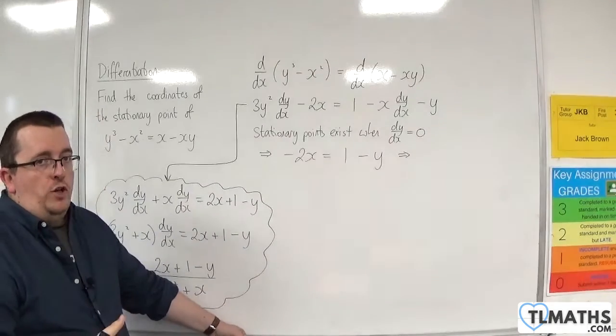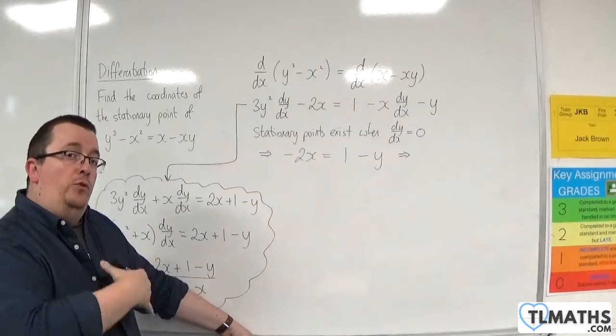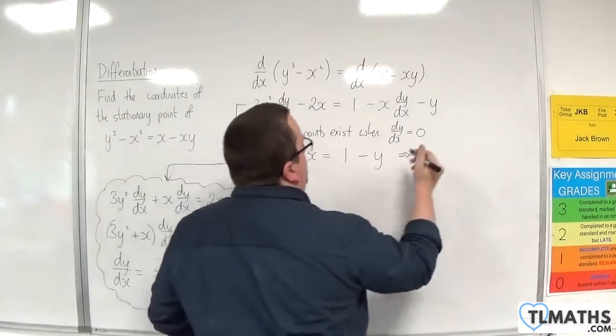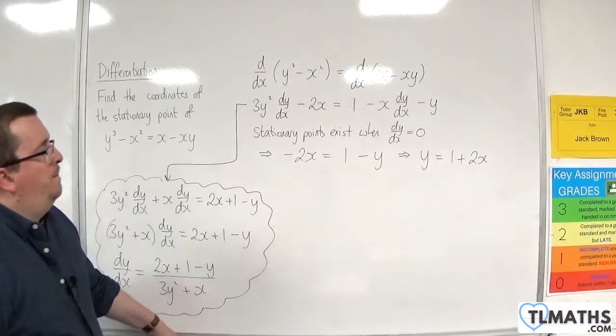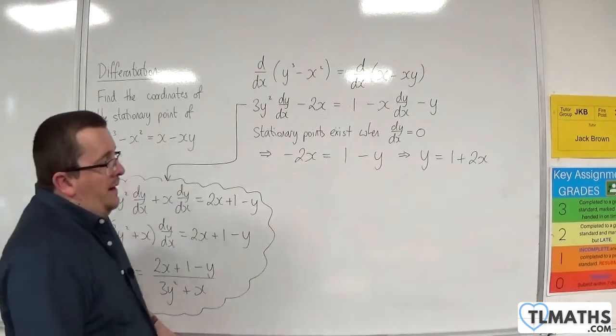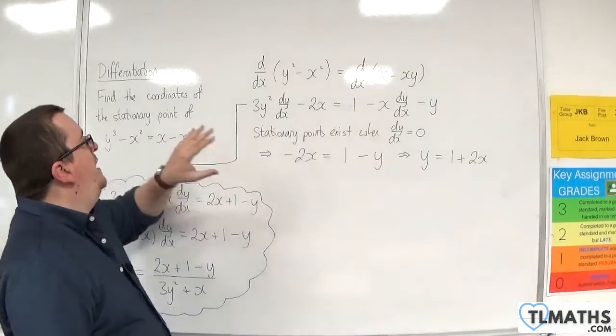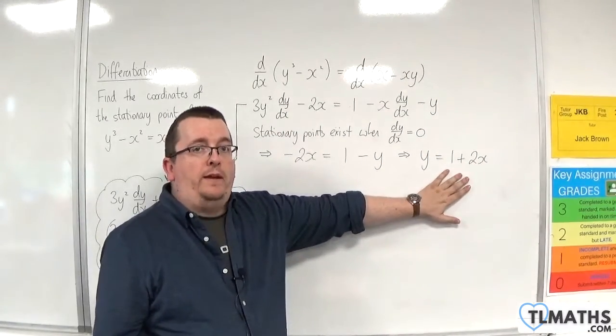Now, with this, what you want to do is rearrange it. You can either rearrange it to get x equals or to get y equals. It seems more reasonable to do y. So y = 1 + 2x. Now, what this means is that any stationary points of the original curve lie on the line y = 1 + 2x.